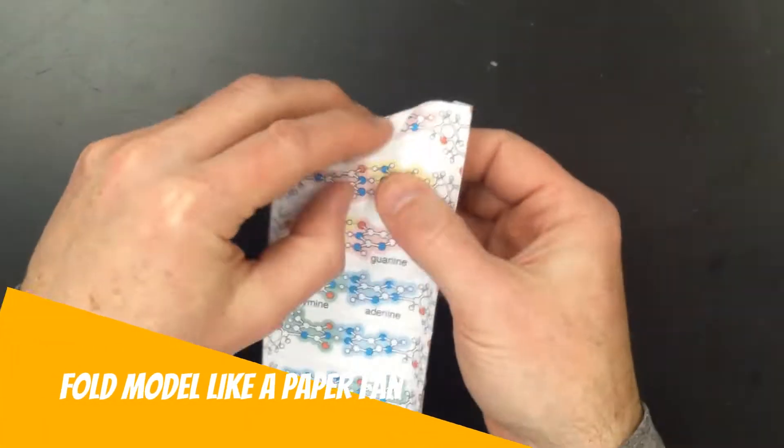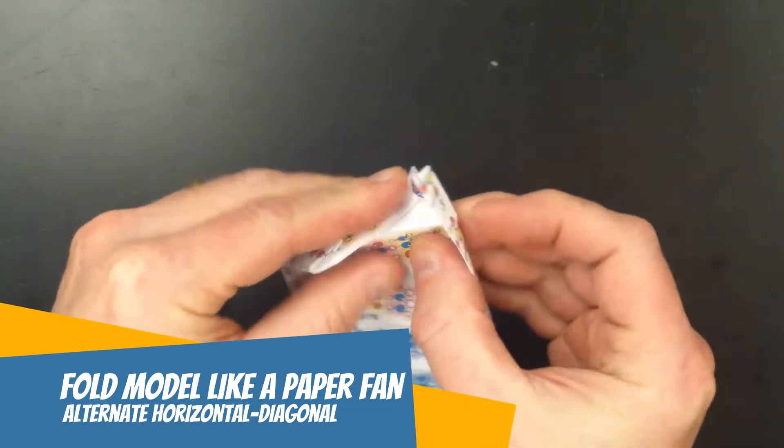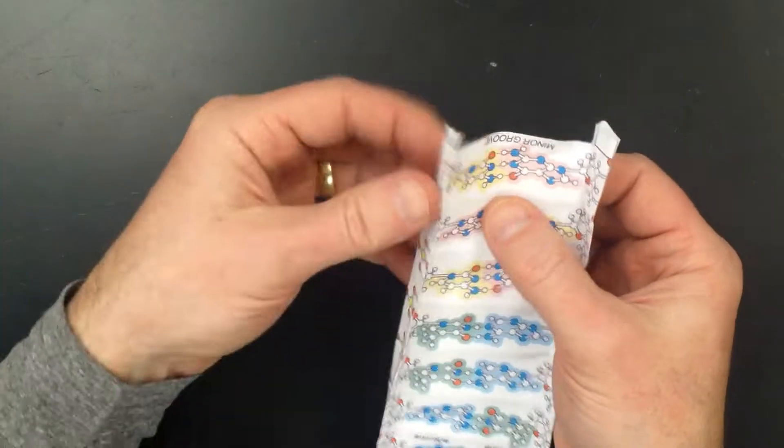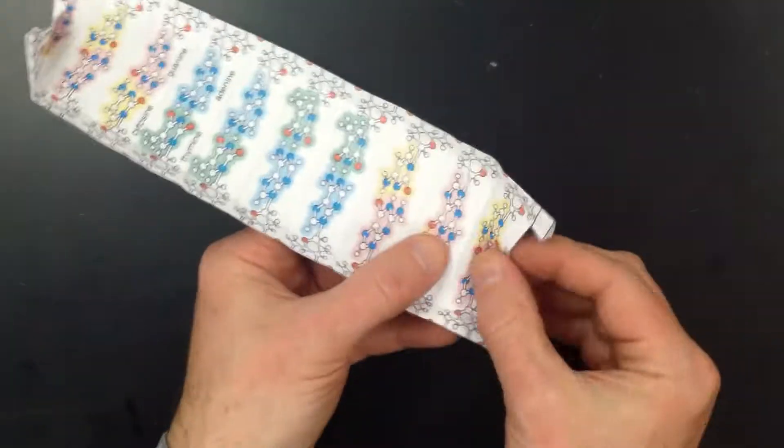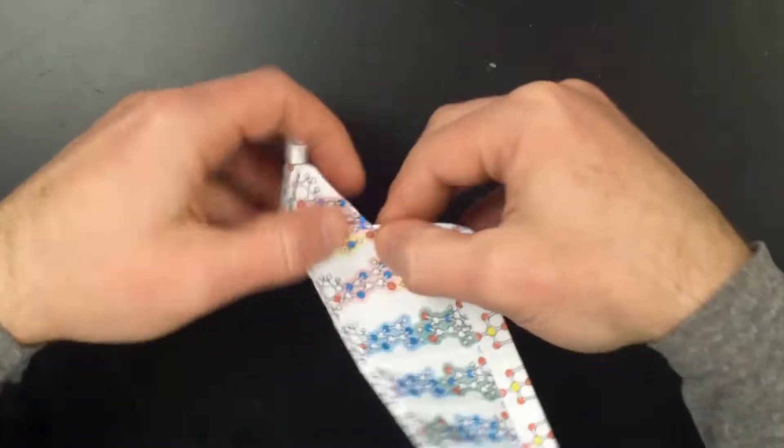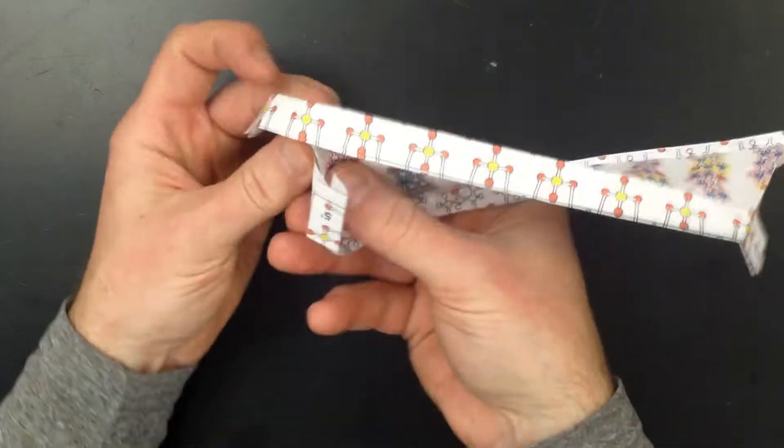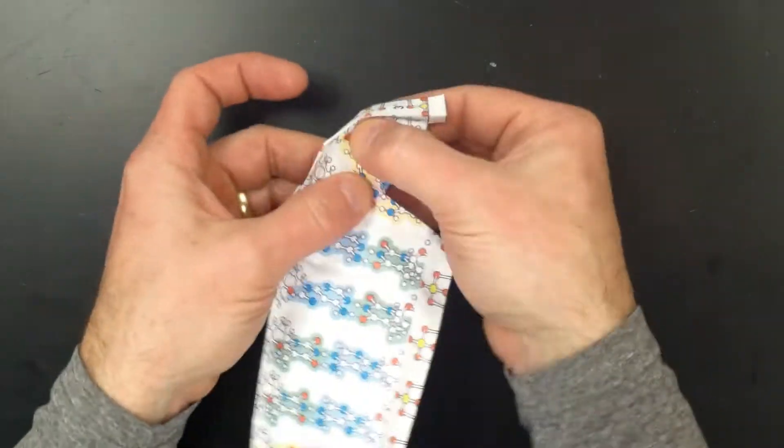To finalize the double helix structure you will need to alternate folding horizontal and diagonal ladder creases, almost like folding a paper fan. You can do this from either end and eventually your model should look like a wheel.